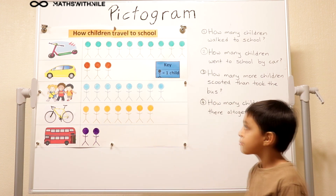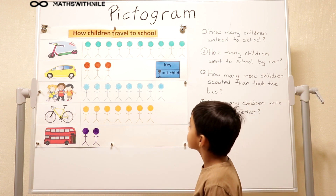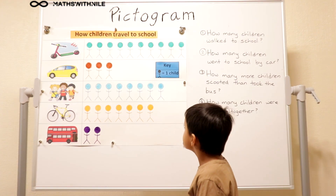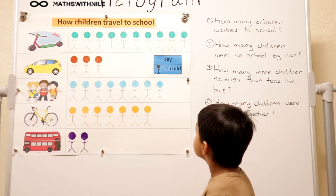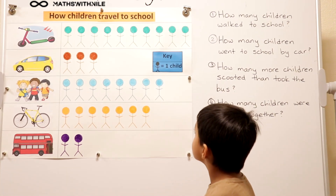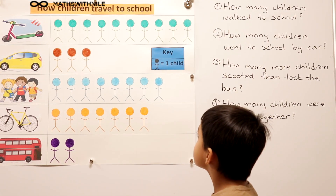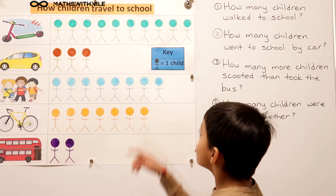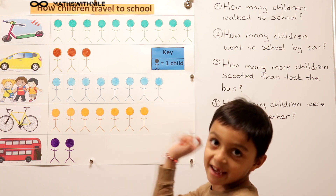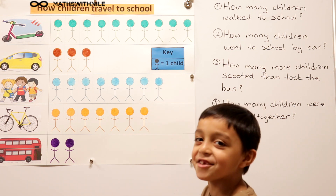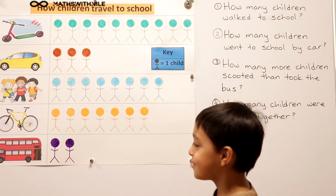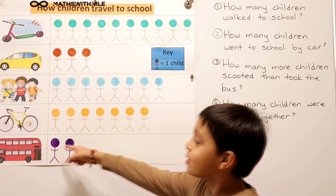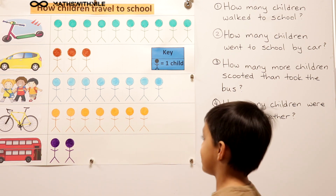And you see the information in that blue box — that's very, very important. That's our key. Can you tell us what information that box is saying there? One of those drawings is equal to one child.